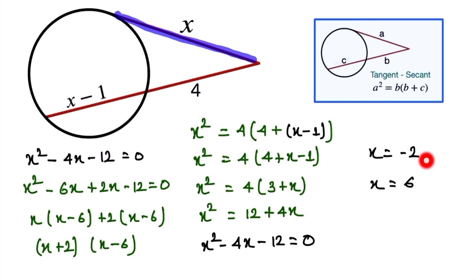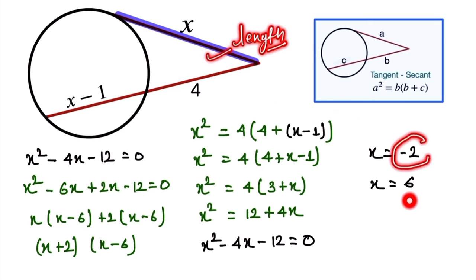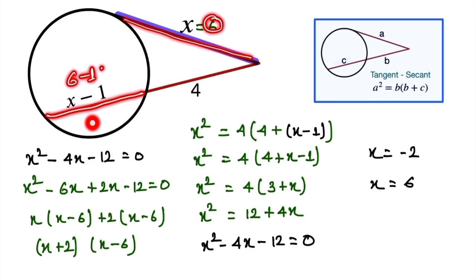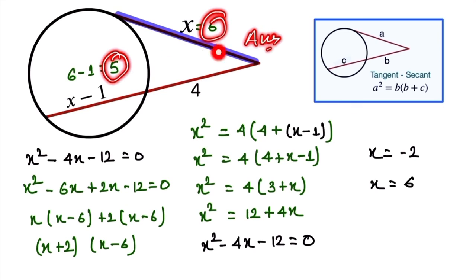Since this represents a length, and lengths are always positive, we can't take minus 2. Therefore, x equals 6. This means the other length is 6 minus 1, which equals 5. This is our final answer.